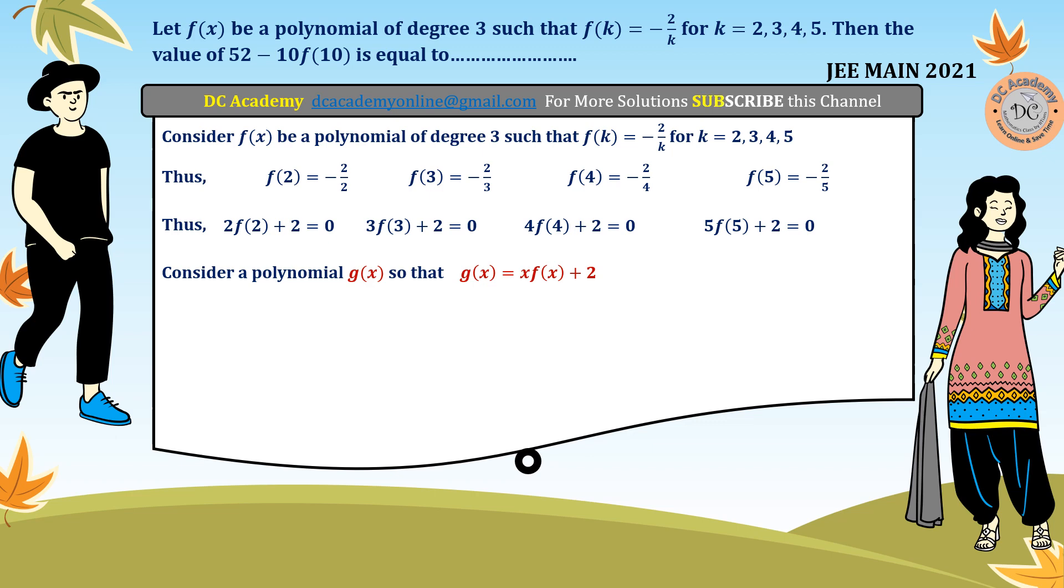Now observe that f(x) is a polynomial of degree 3, and we multiply it by x. So therefore, xf(x) has become a polynomial of degree 4, and hence g(x) is a polynomial of degree 4. So therefore it's obvious that g(x) is a polynomial of degree 4, and it has 4 roots: 2, 3, 4, 5.